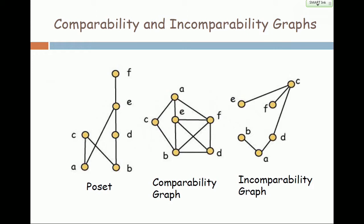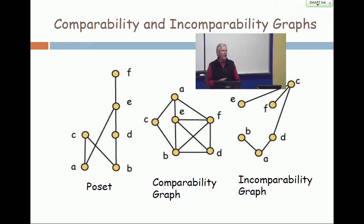So, for example, in the poset, A and F are comparable. A is less than F. They're not a cover. A is not covered by F. F doesn't cover A, but A is less than F. So in the comparability graph, A and F are joined by an edge. And in the incomparability graph, they are not.